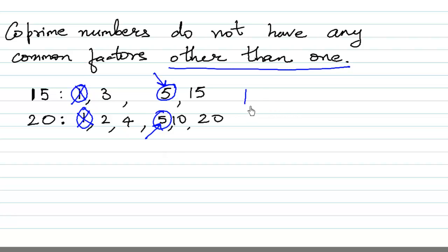Yeah, they have a factor common like 5 is a common factor over here. Then these numbers are not co-prime numbers. They are not co-prime numbers.